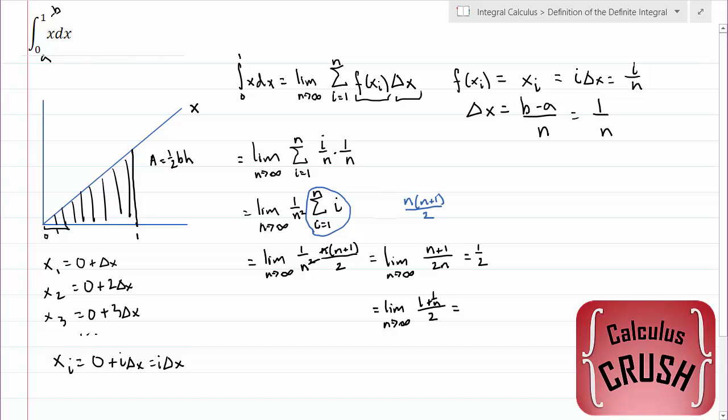Now if we take the limit as n goes to infinity, 1 over infinity is 0. So this guy goes to 0. And all we're left with is 1 half, just as we have up here.